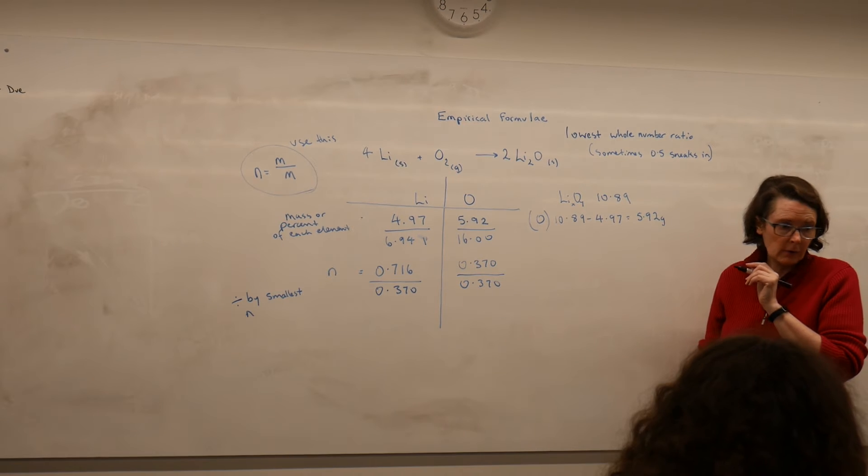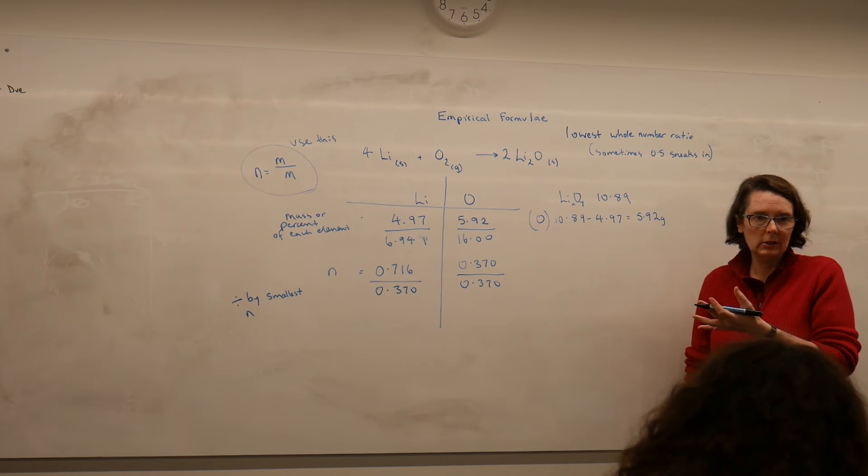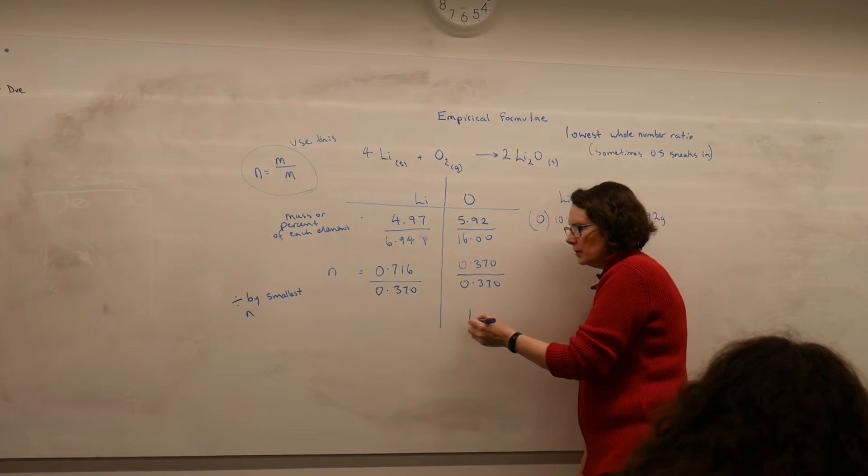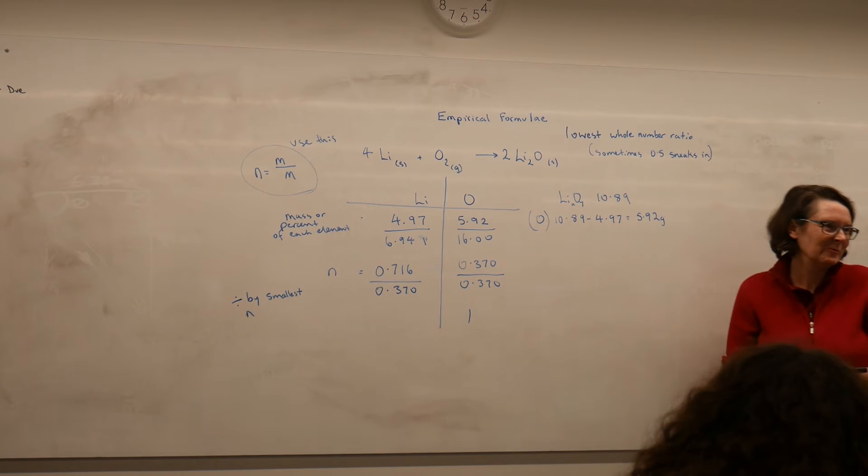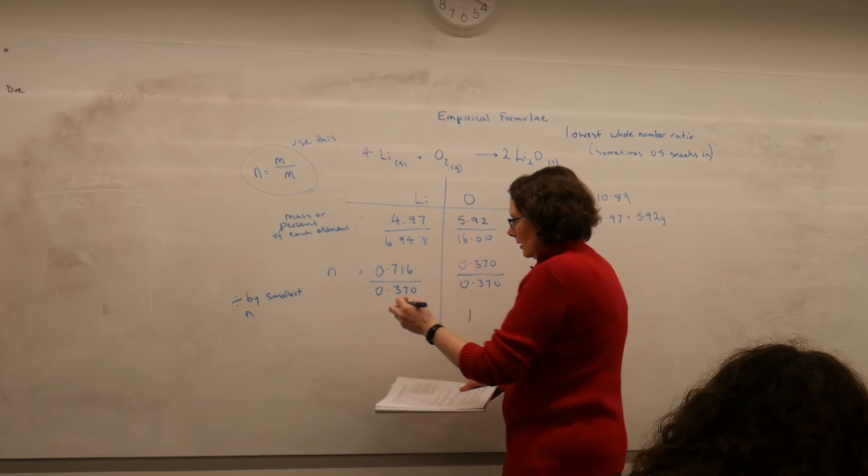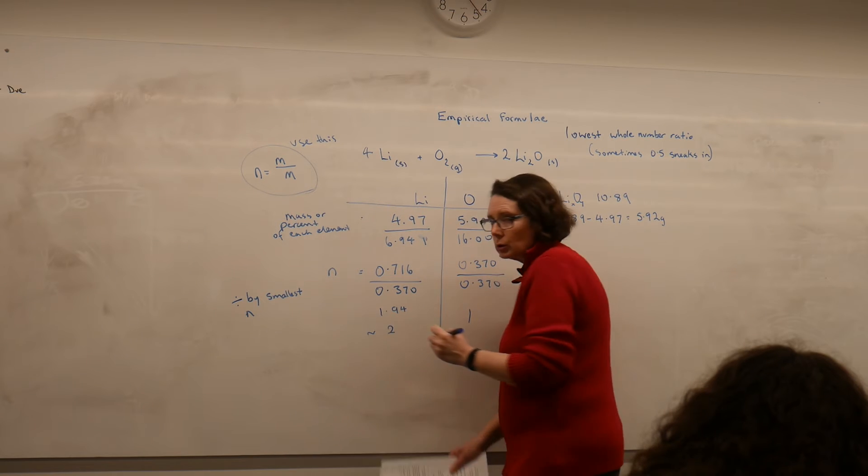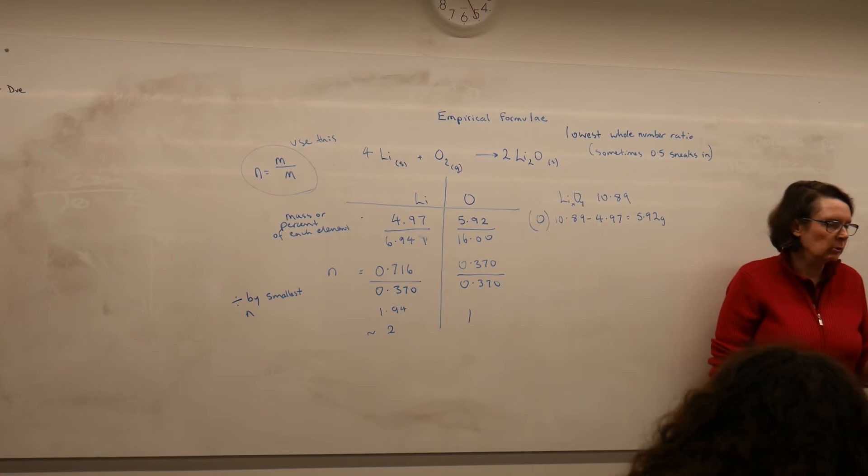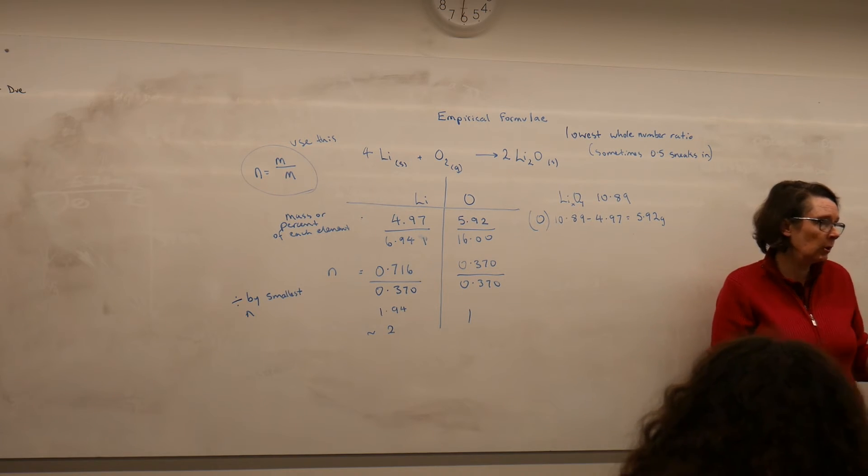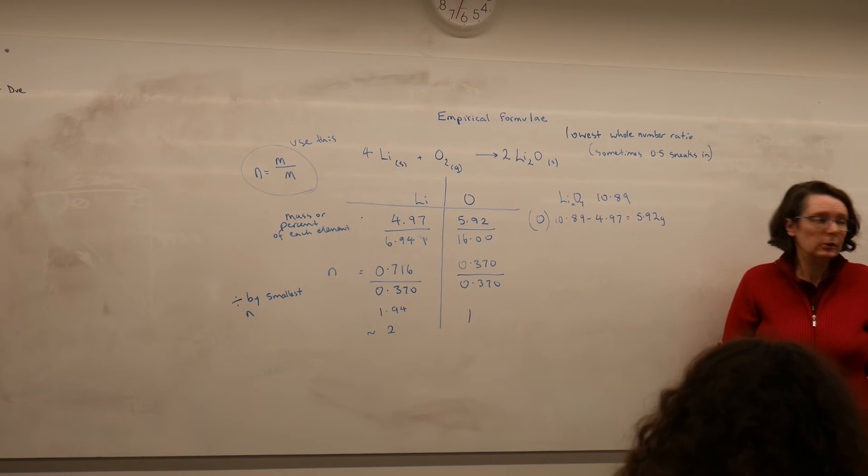Now, the one that I've divided by itself is always going to come out to be 1, isn't it? And then this one came out to be 1.94, which is approximately 2. We have to round it up to a whole number because that's what we're after is an empirical formula.